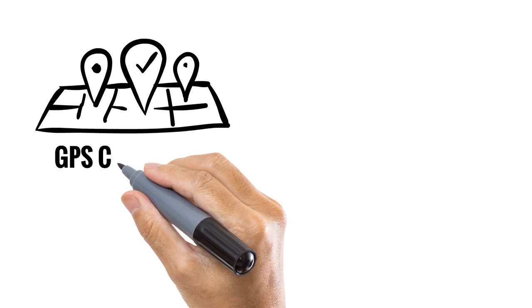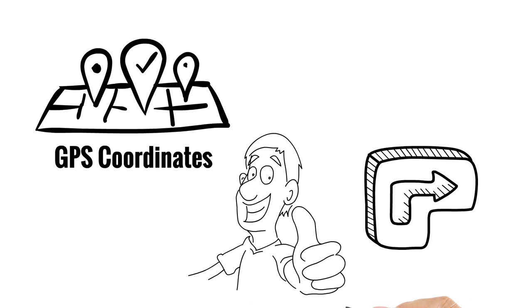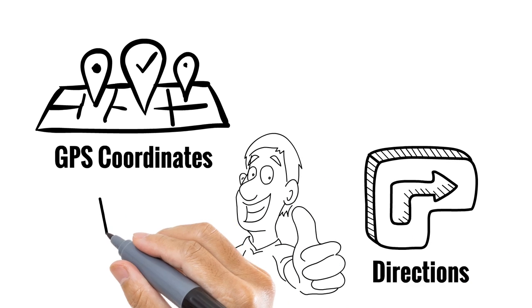The emergency alert includes your exact GPS coordinates and your trusted friends will get turn-by-turn directions to your location so they can come and help you in need.